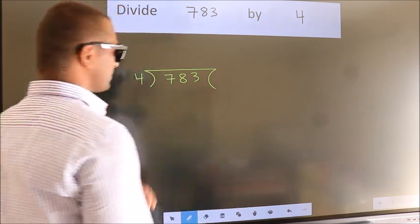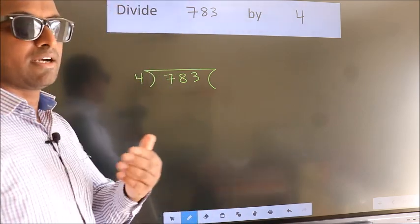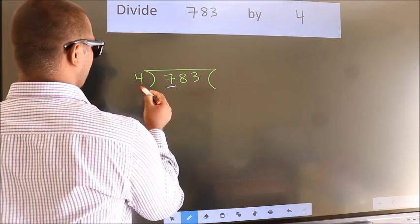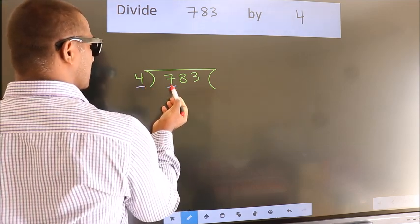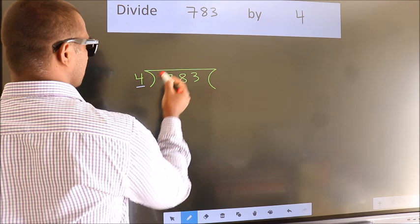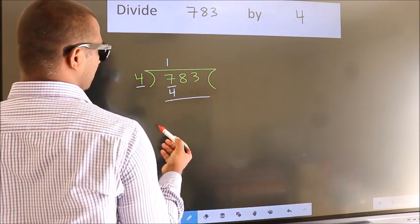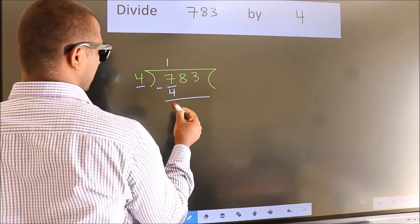This is your step 1. Next. Here we have 7, here 4. A number close to 7 in 4 table is 4 once 4. Now, we should subtract. We get 3.